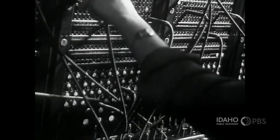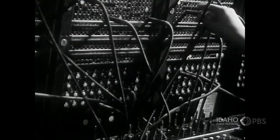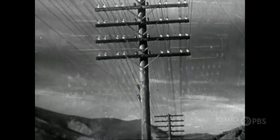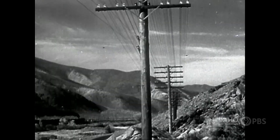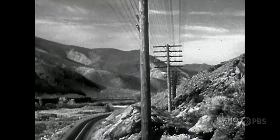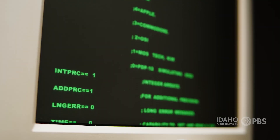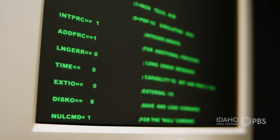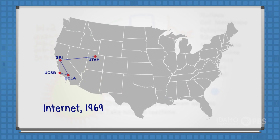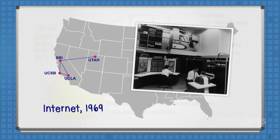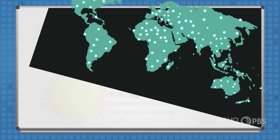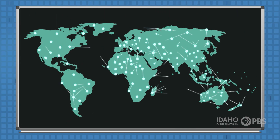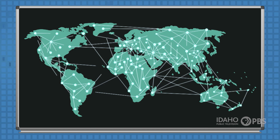Eventually, telephone wires connected the world. And as computers were invented, they used those telephone lines to send data. The internet was created in 1969 when scientists from four American universities tied together their computers to share data. The internet is a worldwide connection of computers all sharing data.